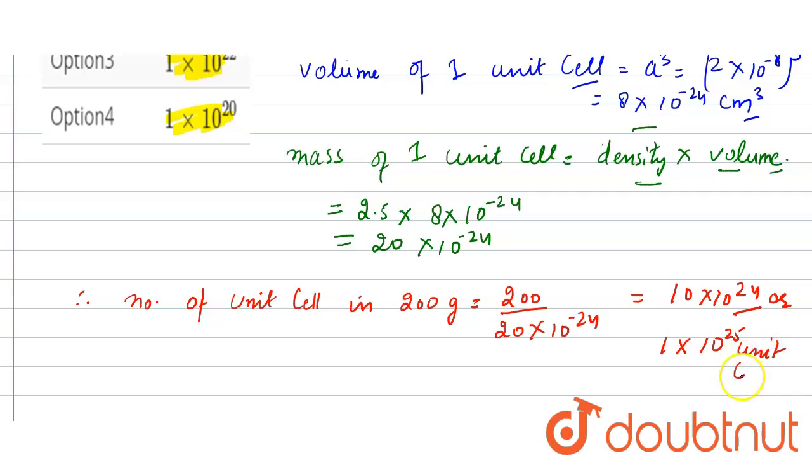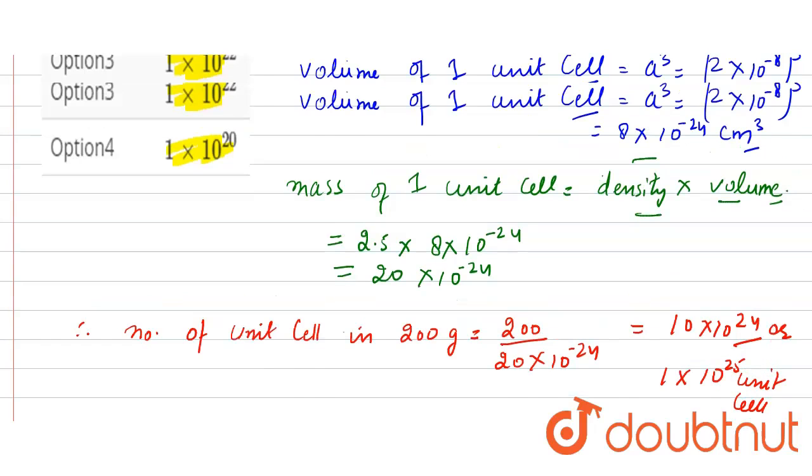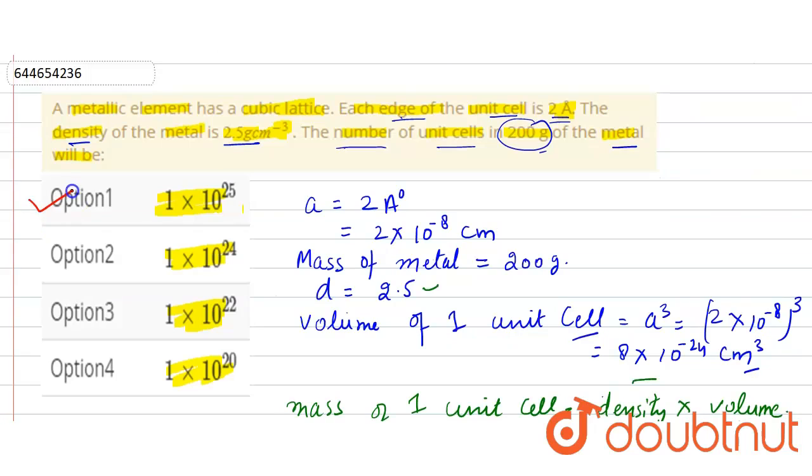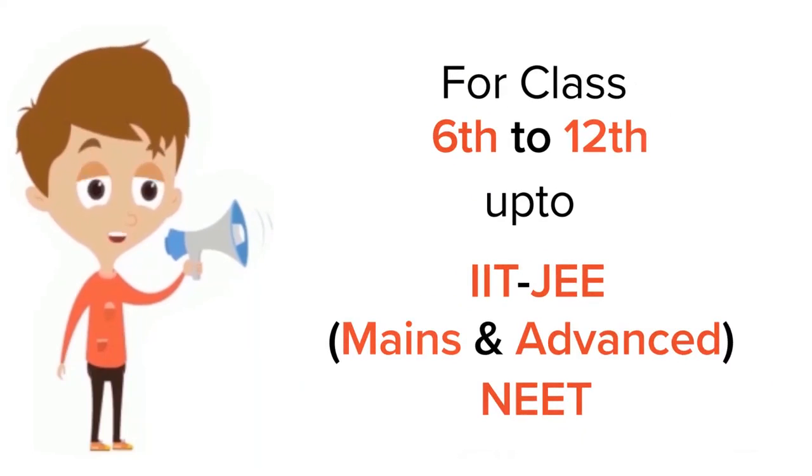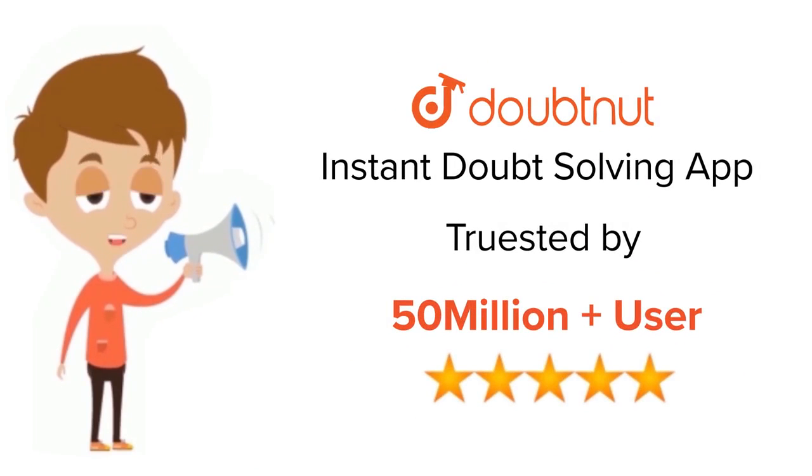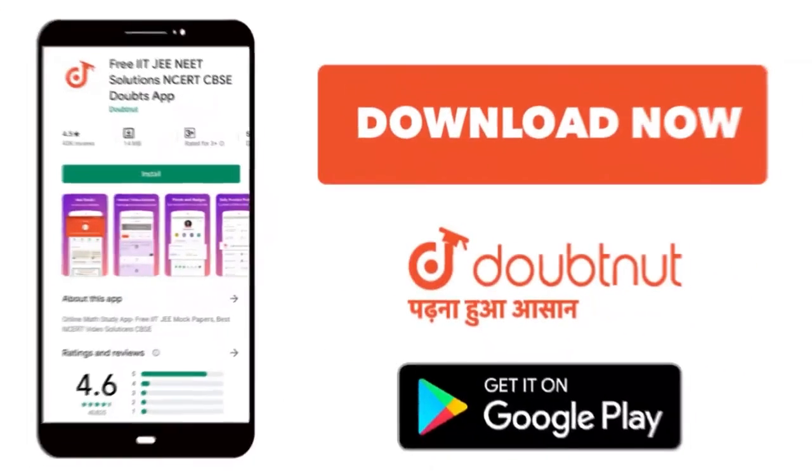So here option first is correct. Thank you. For class 6 to 12, IIT-JEE and NEET level, trusted by more than 5 crore students, download Doubtnut app today.